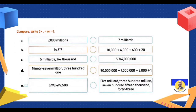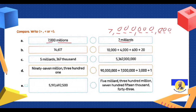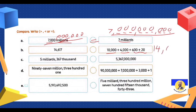Compare greater than, less than, or equal. Seven million — counting: one, two, three comma one, two, three comma one, two, three — millions with thousands, ones with tens, hundreds. Seven thousand million means I add extra digits: one, two, three, four, five, six — so now ten digits and here ten digits, both equal. Next: 14,617 and 10,000 plus 4,000 = 14,000, comma 620. So 620 is greater than 617.